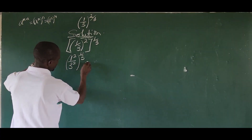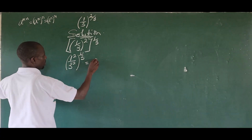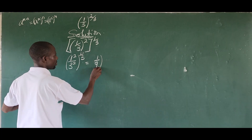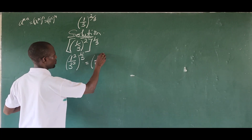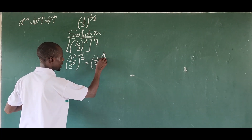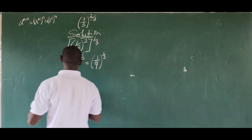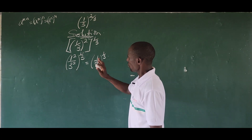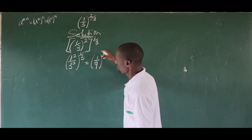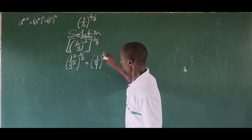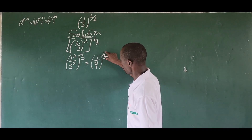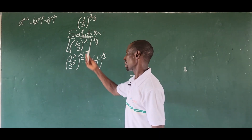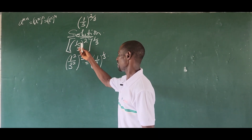This will give us one all over nine, all raised to the power of one all over three. Again, we can use this same property to distribute the outer power to everything inside the bracket, just as we did in the previous step.